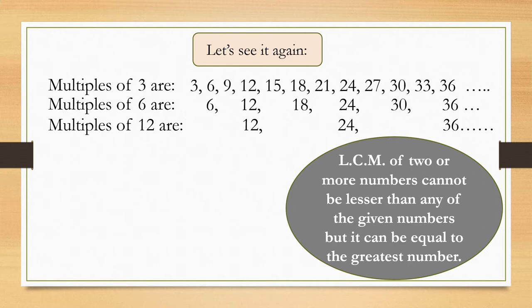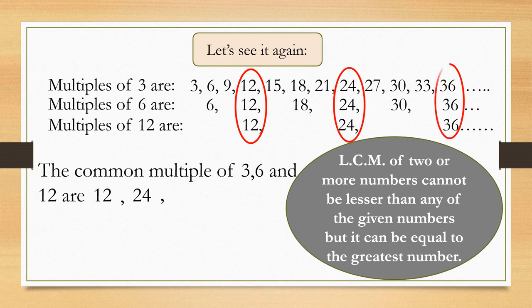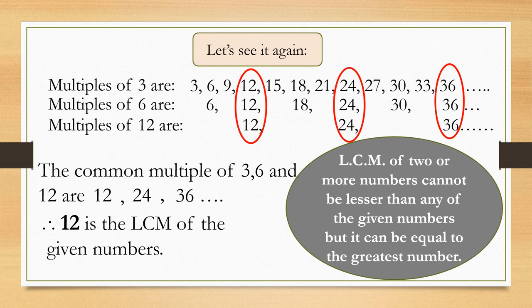Remember, LCM of two or more numbers cannot be lesser than any of the given numbers but it can be equal to the greatest number. The common multiples of 3, 6 and 12 are 12, 24, 36 and so on. Therefore, 12 is the LCM of the given numbers.